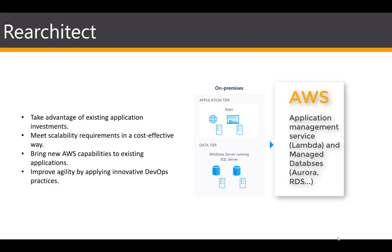Moving on down the complexity chain, we have re-architect, which essentially means modifying or extending your application's code base to scale and optimize it for the cloud. Here you would modernize your app into a resilient, highly scalable, independently deployable architecture, and use AWS to accelerate that process. You can scale applications with confidence and manage your apps with ease. This is essentially moving down the complexity chain in terms of changing the architecture of your applications.